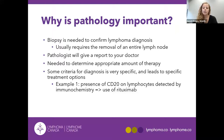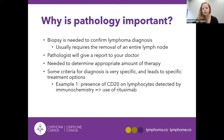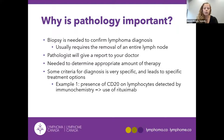A biopsy is required to confirm a lymphoma diagnosis. Usually an entire lymph node needs to be removed in order to get clear results. A pathologist will examine the cancer cells under the microscope, run some tests, and then a report is given to your doctor. This is what is needed to confirm what type of lymphoma you have and the treatment options available to you. For example, if the report shows that your lymphoma cells express a protein marker called CD20, this can qualify you for receiving an antibody treatment called rituximab.